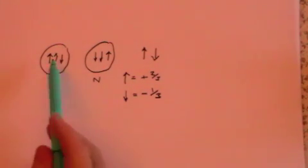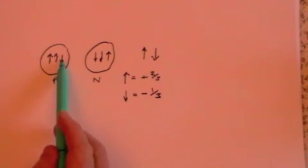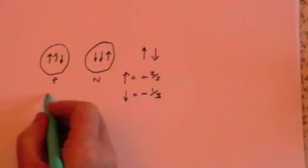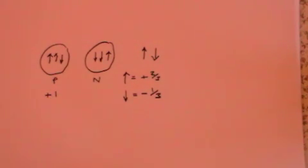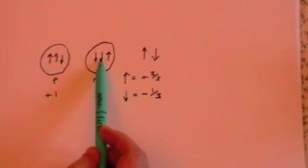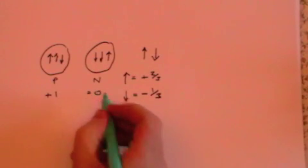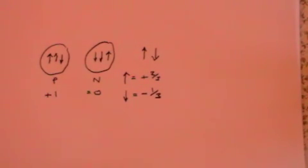So a proton has a total charge of plus two thirds, plus two thirds, minus one third, which equals plus one. The neutron has a charge of minus one third, minus one third, plus two thirds, which equals zero. The quark seems to be a fundamental particle. It cannot be divided.